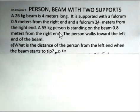The supports are 0.5 meters from the right end and 2.4 meters from the right end. We have a 55 kilogram person that right now is in between the two supports, but the person is going to walk to the left end of the beam, past that left support. The calculation to be done is to find the distance of the person from the left end when the beam starts to tip.